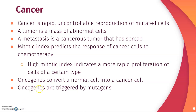Let's talk a little bit about oncogenes. Oncogenes basically convert a normal cell into a cancer cell, and they are triggered by mutagens. Mutagens are external factors — for example, if you walk by someone who's smoking a cigarette, that smoke is a mutagen because it can have a harmful impact on your cells and your body.